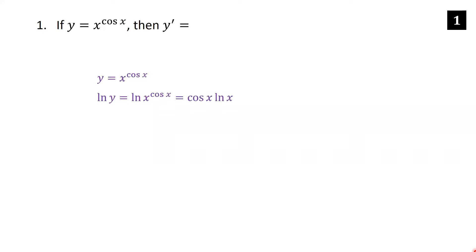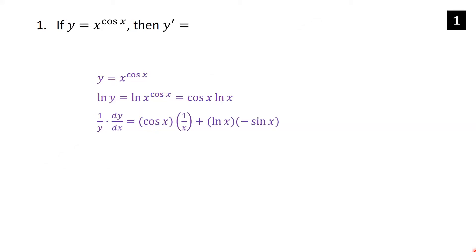Now we're going to differentiate each side of this equation. On the left we'll use implicit differentiation: the derivative of ln y is one over y, and then by the chain rule times dy/dx. On the right we have a product rule, so the first is cosine x times the derivative of ln x, which is one over x, plus the second, which is ln x, times the derivative of cosine x, which is minus sine x.